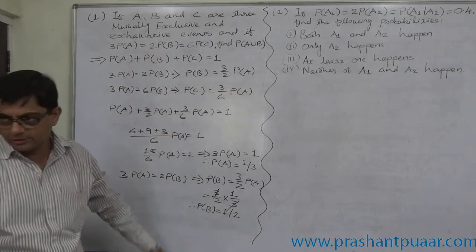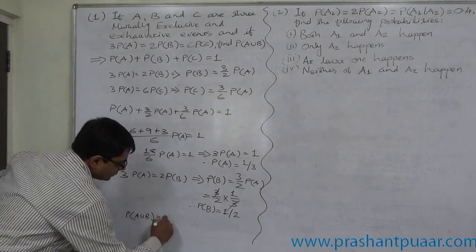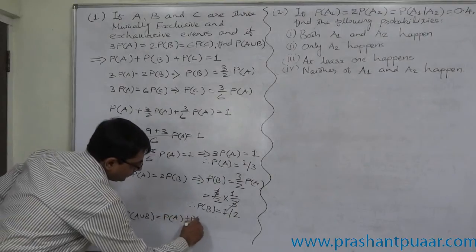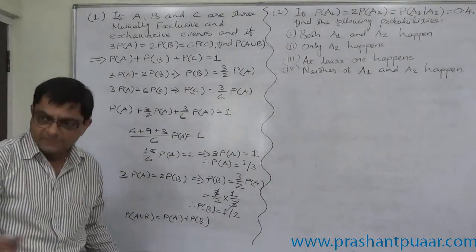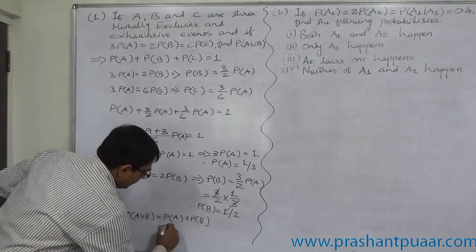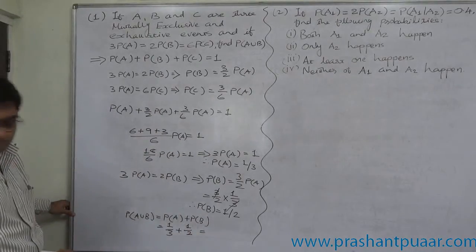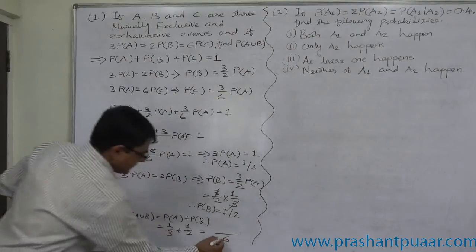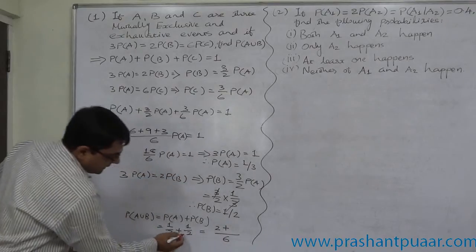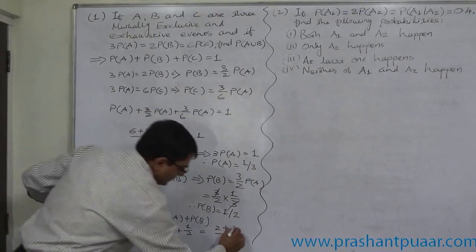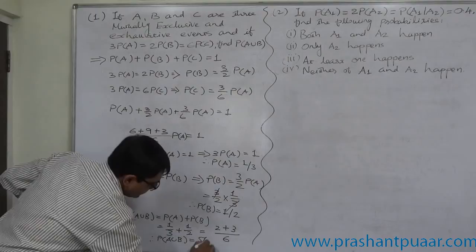Now we know that A, B and C are mutually exclusive. So P of A union B equals P of A plus P of B, since they are mutually exclusive — simultaneous happening, meaning intersection is not possible. So it is 1/3 plus 1/2. LCM is 6: 6/3 = 2, so 2 × 1 = 2; plus 6/2 = 3, so 3 × 1 = 3. Therefore P of A union B equals 5/6.